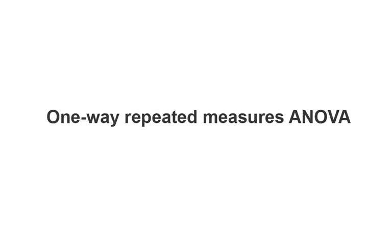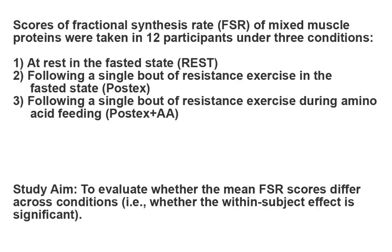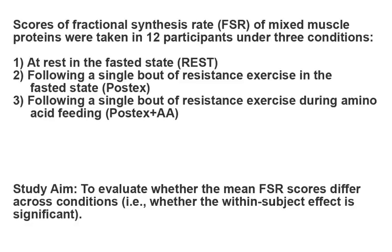First, we will go over an example of a one-way repeated measures ANOVA. Suppose you were given a data set with scores of fractional synthesis rate (FSR) of mixed muscle proteins taken in twelve participants under three conditions: at rest in the fasted state, following a single bout of resistance exercise in the fasted state, and following a single bout of resistance exercise during amino acid feeding. The aim of the study was to evaluate whether the mean FSR scores differed across conditions.